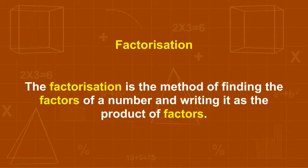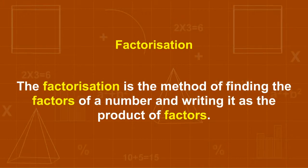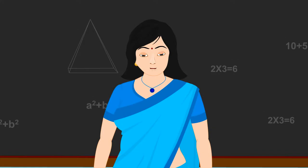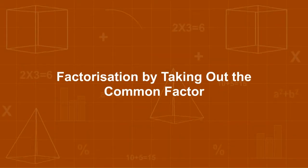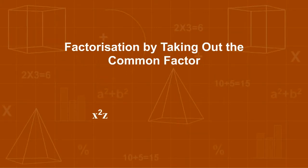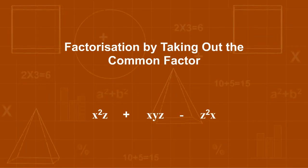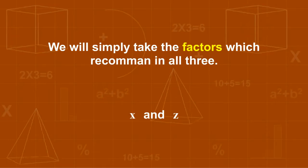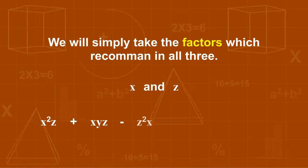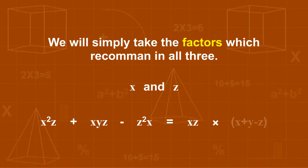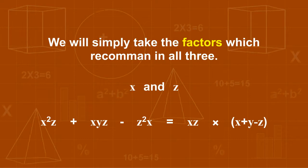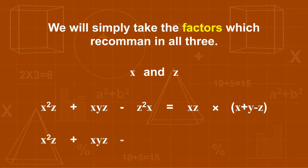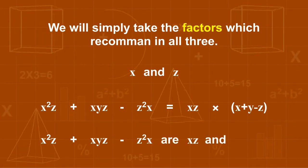Factorization. The factorization is the method of finding the factors of a number and writing it as the product of factors. Similarly, we can write an algebraic expression as the product of its factors. For example, factorize x²z + xyz − z²x. We take the common factors x and z, so x²z + xyz − z²x = xz(x + y − z). The factors are xz and (x + y − z).